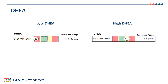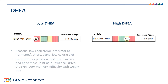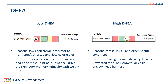DHEA is an anabolic adrenal hormone produced by the adrenals in higher amounts in men compared to women. With low DHEA, it can be due to aging, stress, or a low-calorie diet. We may experience mood changes, decreased muscle and bone mass, pain, lower sex drive, dry skin, poor memory, or problems with weight loss. High DHEA can be due to stress, PCOS or polycystic ovary syndrome seen in women, and other health conditions. With an elevation or low levels, you should consult with your healthcare practitioner for further testing or evaluation.